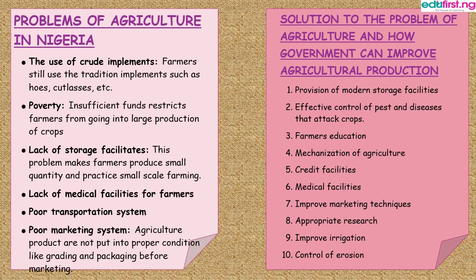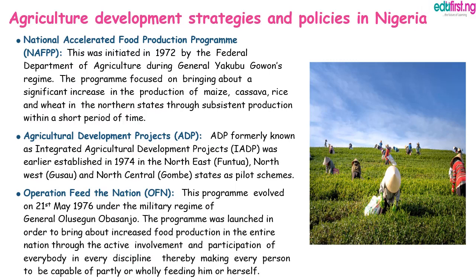Now let's look at some of the solutions to the problems of agriculture in Nigeria and how governments can improve agricultural production. Number one is through the provision of modern storage facilities. Number two is by effective control of pests and diseases that attack crops. Number three is by educating farmers. Number four, the mechanization of agriculture. Number five, provision of credit facilities for farmers. Number six, provision of adequate medical facilities. Number seven, improving marketing techniques. Number eight, through appropriate research. Number nine, improving irrigation, and number ten, the control of erosion.